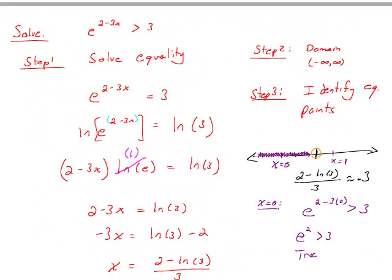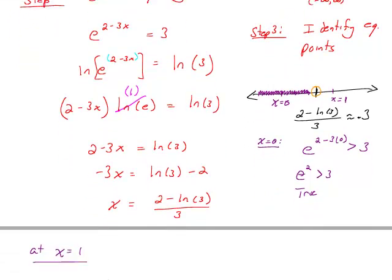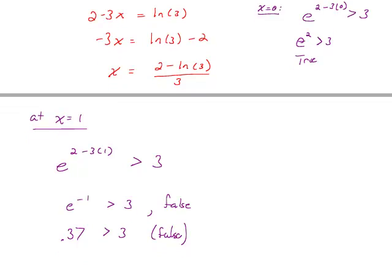And so that really tells me when I go back to that number line, anything to the right of this number here is going to give me a false statement for that inequality problem. So what is my solution to this inequality? So again our problem was e to the 2 minus 3x is bigger than 3.